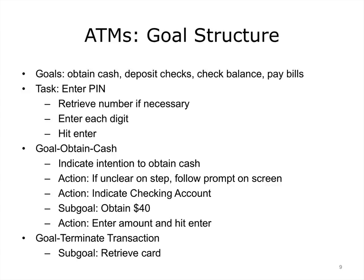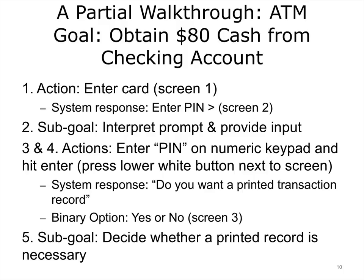Our first example uses an ATM, or automated teller machine. This slide provides the input to the cognitive walkthrough. ATMs support a handful of tasks such as obtaining cash, depositing checks, and paying bills. ATMs are walk-and-use technologies — no training is needed, and almost everyone knows how to use one. This is a partial walkthrough of an ATM. The task and top-level goal is to obtain $80 in cash from your checking account. There are a total of 11 actions.